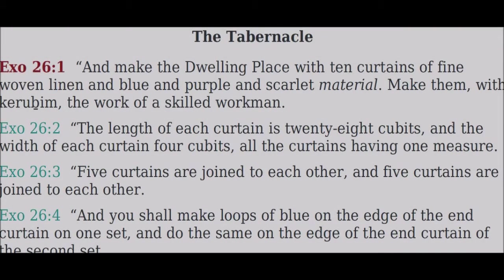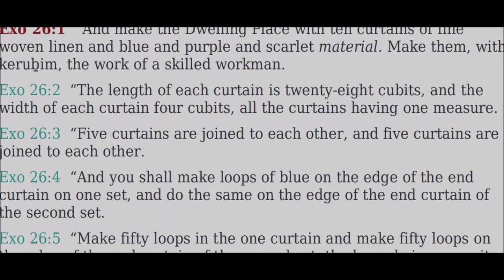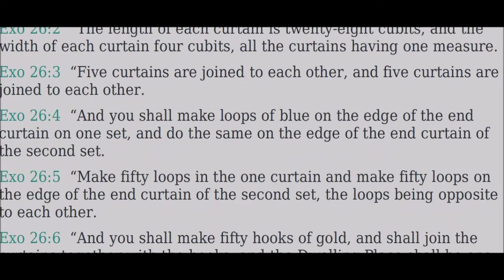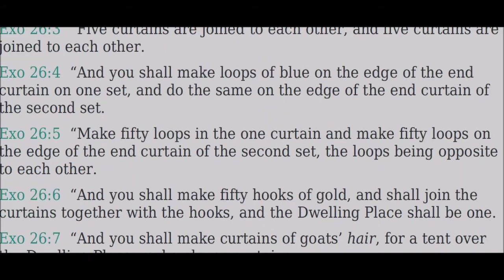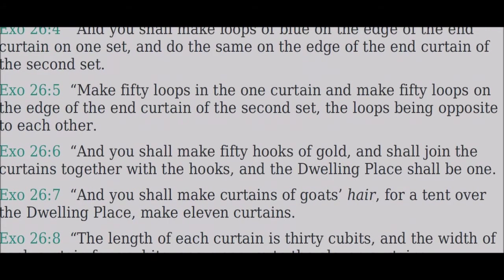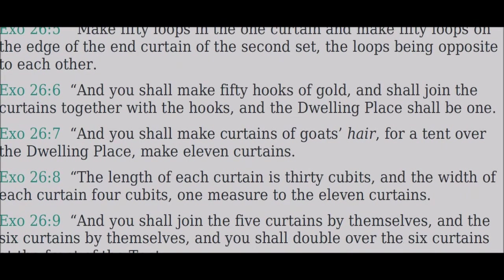Shimot chapter twenty-six. Make the dwelling place with ten curtains of fine woven linen, and blue and purple and scarlet material, made with keruvim, the work of a skilled workman. The length of each curtain is twenty-eight cubits and the width four cubits, all curtains having one measure. Five curtains are joined to each other, and five curtains are joined to each other. Make loops of blue on the edge of the end curtain on one set, and the same on the edge of the end curtain of the second set. Make fifty loops in the one curtain and fifty on the edge of the second set, the loops being opposite each other. Make fifty hooks of gold, and join the curtains together with the hooks, and the dwelling place shall be one.